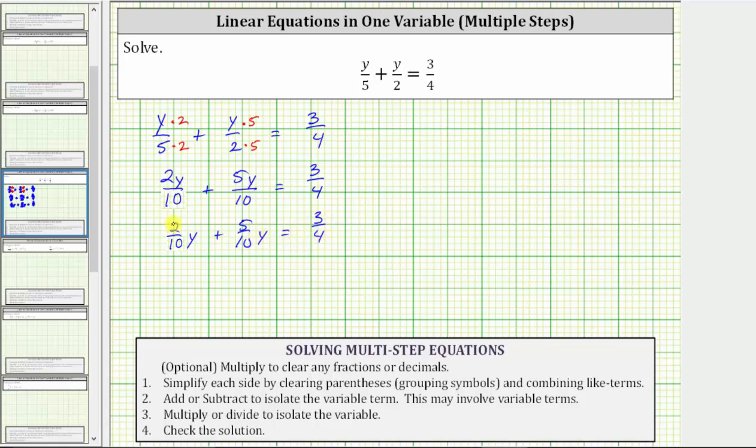Two-tenths plus five-tenths is seven-tenths, which means two-tenths y plus five-tenths y equals seven-tenths y. We have seven-tenths y equals 3 fourths.